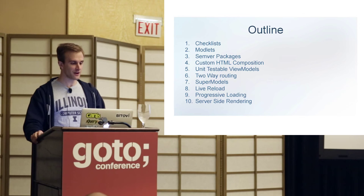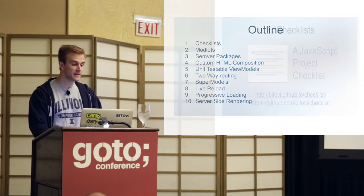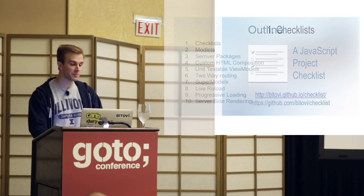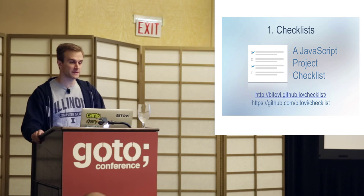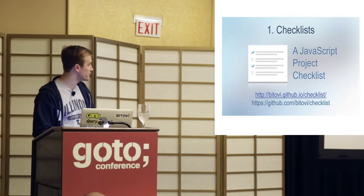Despite how technical I said this talk was going to be, the first thing that I think we do uniquely at Betovi is make use of checklists. Checklists have a long history of making everything better, from helping pilots fly to helping doctors save lives. We have a checklist project at Betovi GitHub.io checklist — a really simple checklist that has management, UX, and development questions.